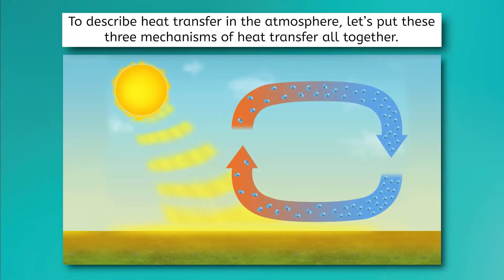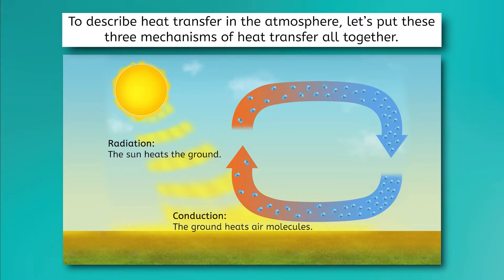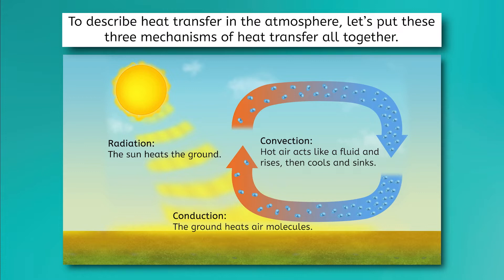To help describe heat transfer in the atmosphere, let's put these three mechanisms all together. Radiation from solar energy heats the ground. Conduction happens as this hot ground heats air molecules near the surface. These hot air molecules act like a fluid and rise. As the air rises, it cools and sinks. This circular movement is called a convection current. Convection currents in the troposphere are responsible for many weather and climate patterns and are essential for life. So how do we make sure that as heat moves, it stays in the troposphere and doesn't escape into space?